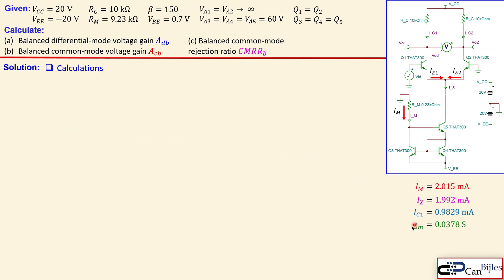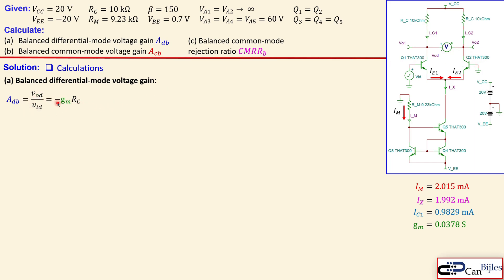Summarizing the key values: gm is one of the most important parameters. The balanced differential mode voltage gain is given by Avd = Vod / Vid = -gm × Rc. You can verify this from the small signal model. Substituting gm and Rc = 10 kΩ, we get Avd = -378.